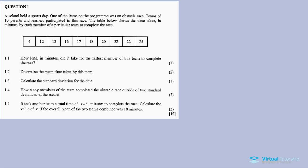For Question 1: A school held a sports day. One of the items on the program was an obstacle race. Teams of 10 parents and learners participated in this race. The table below shows the time taken in minutes by each member of a particular team to complete the race — values are 4, 12, 13, 16, 17, and up to 25 minutes.